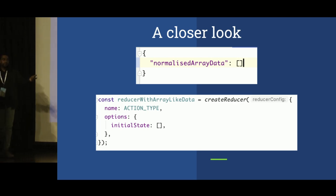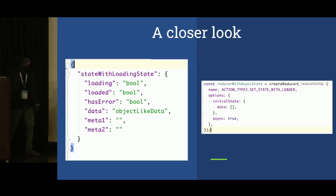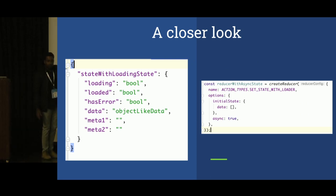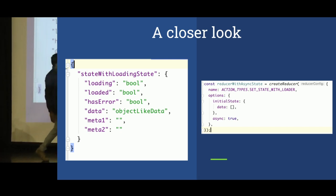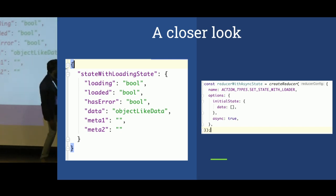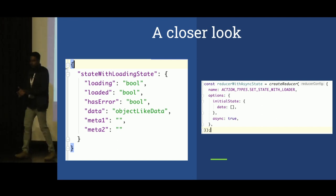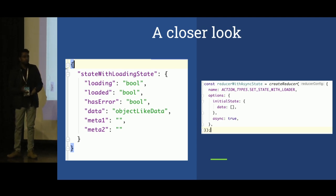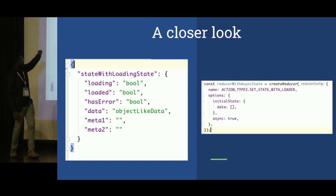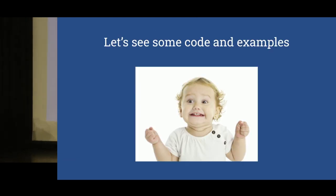What about async state? That was the real game changer. With our solution, this is all the code you need to manage that state — the same code as before, just with one more key: `async: true`. We've told our `createReducer` method that we want this reducer to handle async state. That's it. We'll dive into the code a bit to make ourselves more familiar with how it works.